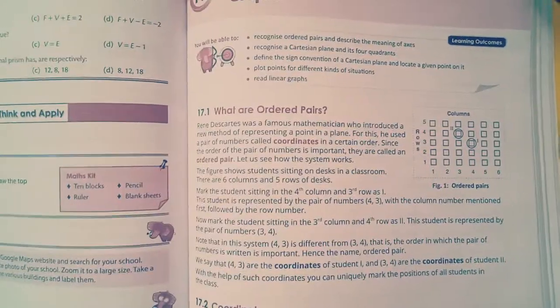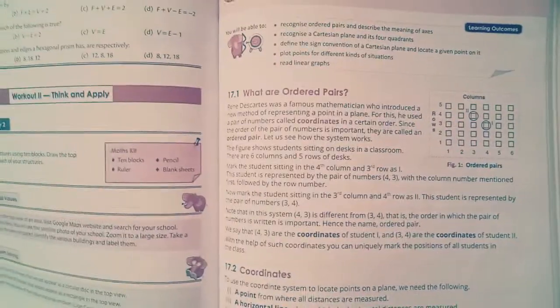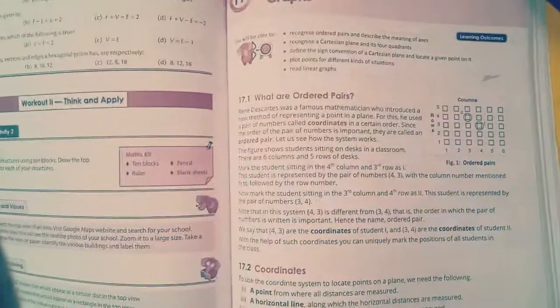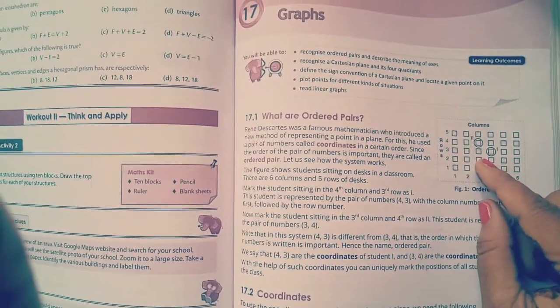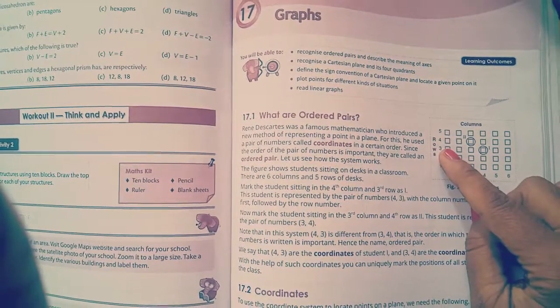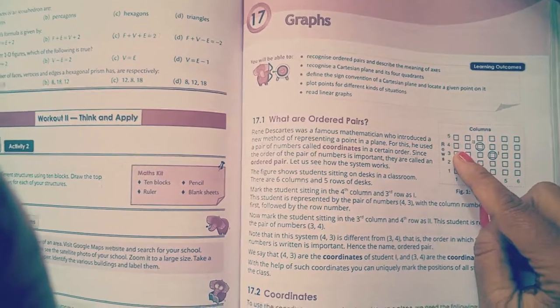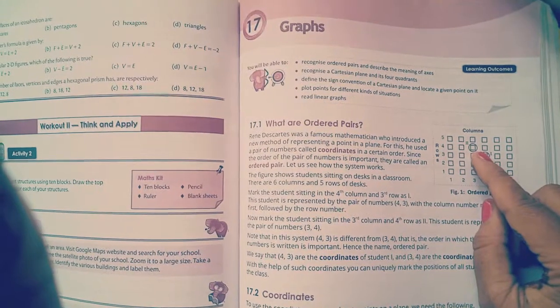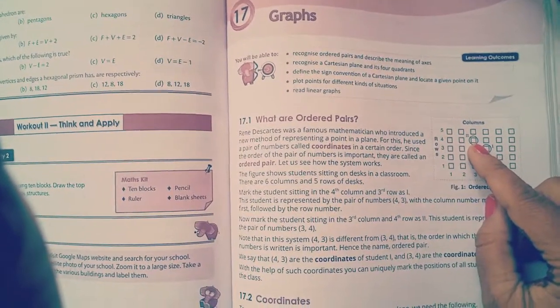Here in the book it is given, for example, you have to find your position in class. You have to tell in which row you are sitting and which column. Suppose here I am telling my location is in fourth row and third column. So this one is the fourth row and third column, here is my position.